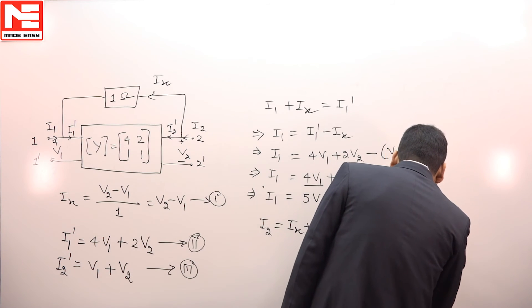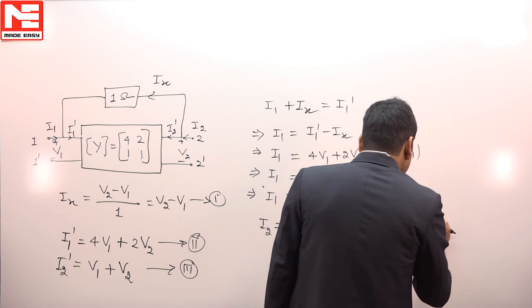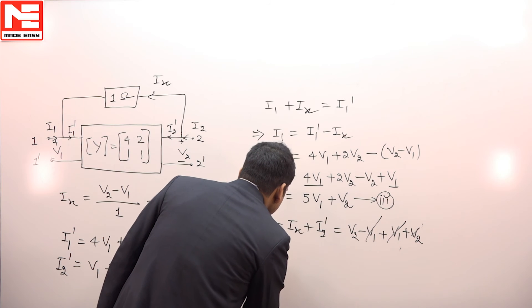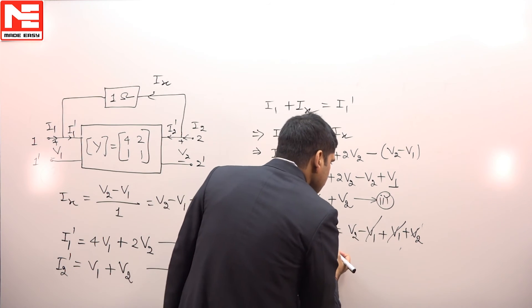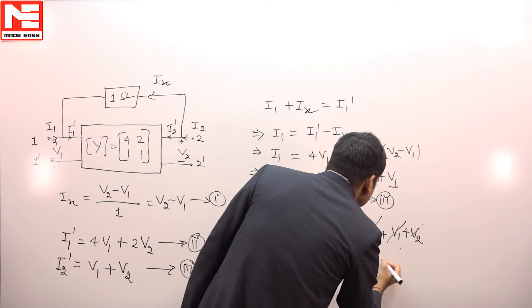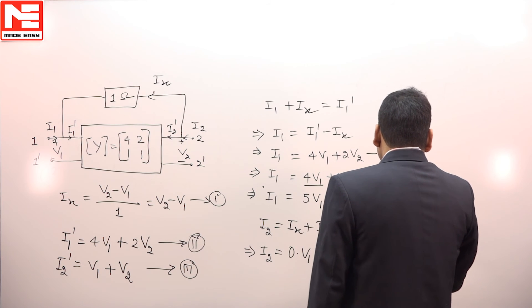So V2 minus V1 plus V1 plus V2, the V1 terms get cancelled. It is i2 equals 0 times V1 plus 2V2. This is equation number 5.